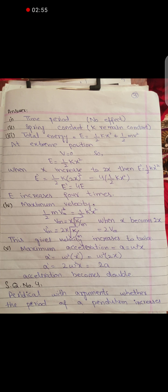For maximum velocity, Vm is equal to X under root K by M. If X is replaced by 2X, the maximum velocity will increase to twice. The maximum acceleration is equal to omega square X. If X is replaced by 2X, the acceleration becomes double.